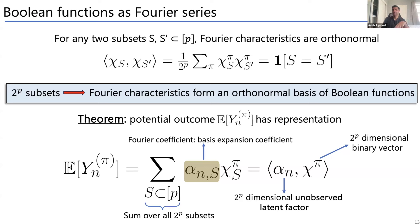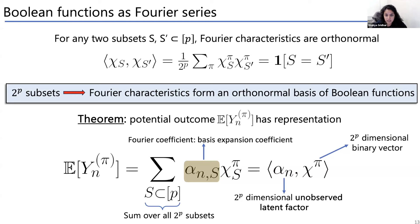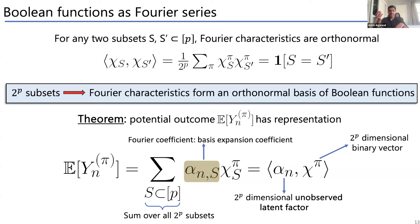[Q&A] A clarifying question: so far we haven't assumed that combinations have an additive structure (summing effects of individual interventions). Confirmed — no such assumption yet. As will be shown next, that kind of assumption implies sparsity in the Fourier basis, i.e., that α_n is sparse, and the framework handles this naturally.